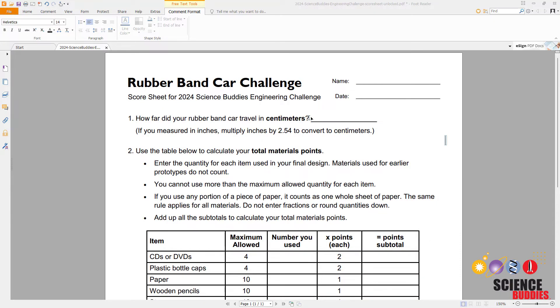If you measured your distance in centimeters, you can just enter that number here, but if you measured in inches you need to convert it to centimeters first by multiplying by 2.54. For our example problem, I will say that my car traveled 21 inches, so I'm going to multiply that by the conversion factor of 2.54 centimeters per inch, which gives me a result of 53.34 centimeters, so I'm going to enter that here.